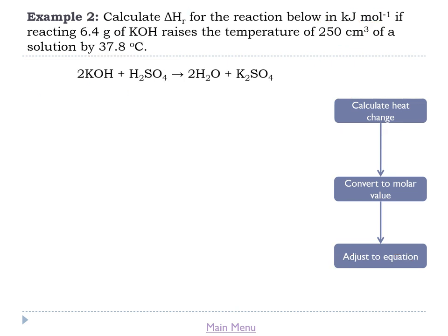Example two: calculate ΔHᴿ for the reaction below in kJ/mol, if reacting 6.4 grams of KOH raises the temperature of 250 cm³ of solution by 37.8°C. This is very similar to the last one with one important difference: the equation has two moles of potassium hydroxide. So after we convert to a molar value, we're going to need to double it, because the equation has two KOHs.